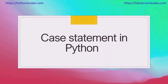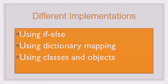My name is Kushal and today I will explain how you can implement a case statement in Python. In Python we don't have a case statement, however we can implement the case statement using any of these three implementations. The first one is using the if-else statement, the second method is using the dictionary mapping method, and the third one is using classes and objects.